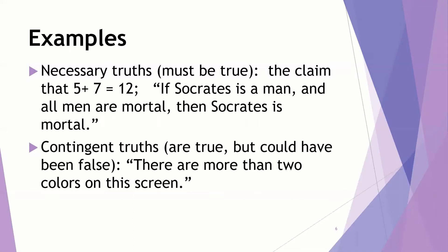Contingent truths, then, which we're more familiar with, these are true but could have been false. There are more than two colors that you can see on this screen, or you are viewing this while sitting. These things are true but could be false. It's possible that you're viewing this while standing. Well, that is also something that would be true and could be false.